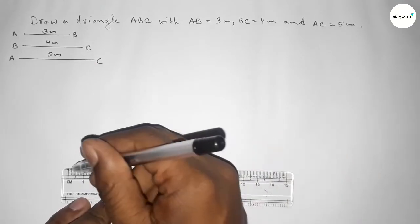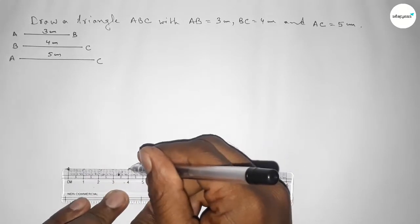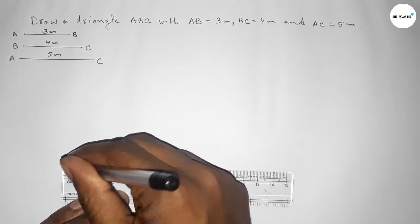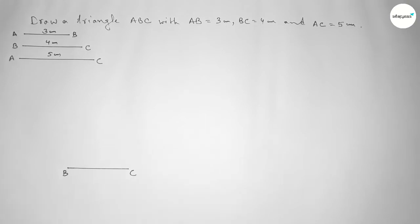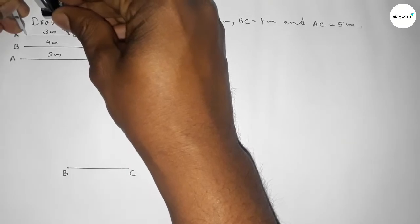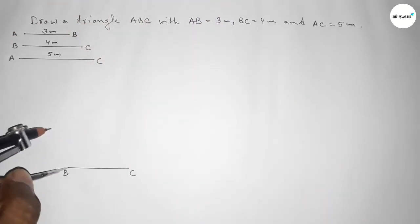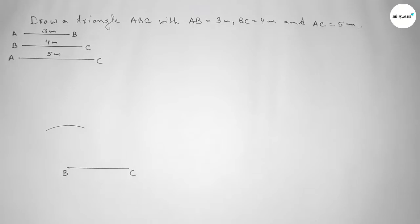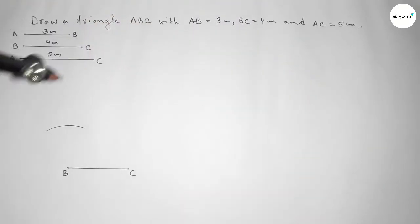Now first we draw a line of length 4 centimeters. This is the 4 centimeter line. Taking point B here and point C here. Now taking the length AB equal to 3 centimeters by using the compass, putting the compass at B and cutting an arc. Again, taking the length AC equal to 5 centimeters by using the compass.